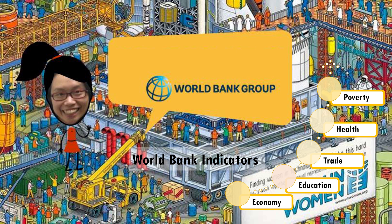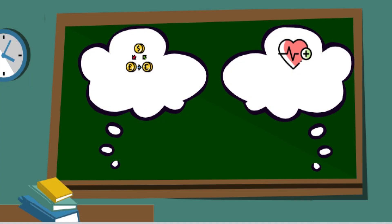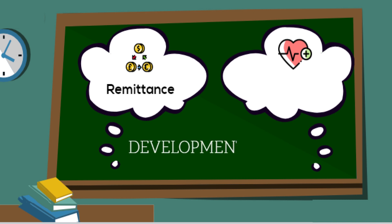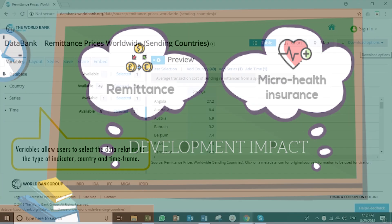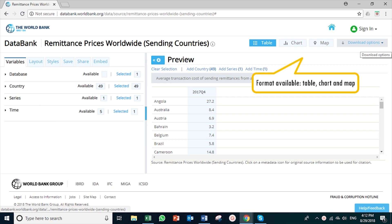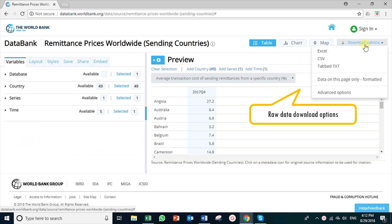So where's Wally in the global development data world? Data.worldbank.org is a popular open data source where you can find world development data sorted by country, region, and topic. Let's take an application example. As remittance brings a significant development impact, my company is hypothetically looking to create a remittance-bundled microhealth insurance product. Let's look at the remittance transaction price. You can see this data in table, chart, and map form. All of the data sets we look at also have an option to download the raw data.